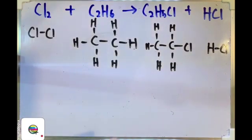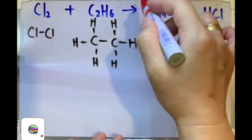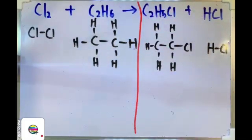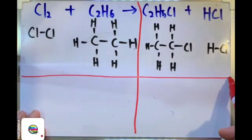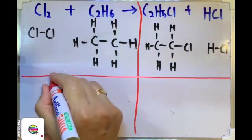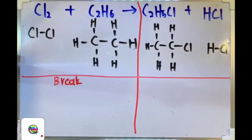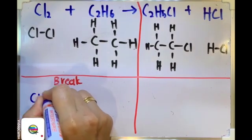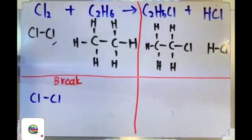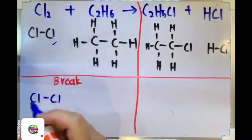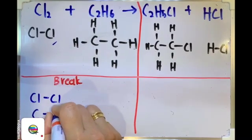Now let's start from the first one. Since in this reaction we involve many different types of covalent bond, it will be easier for us to use a table form to identify the type of covalent bond that is involved here. Let's look at the first column. How many types of covalent bonds did we want to break? The first one will be Cl-Cl bond. This is the first type. Second type is carbon-hydrogen.